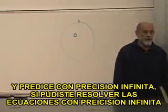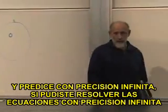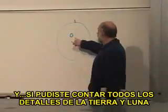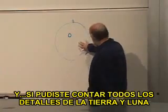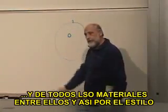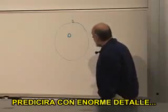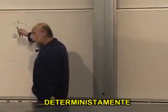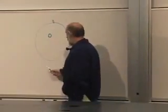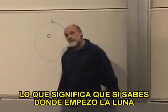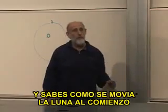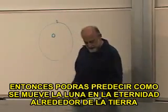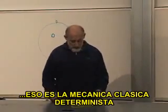And it predicts with infinite precision, if you could work out the equations with infinite precision, and if you could account for every detail of the earth and the moon, and all the material that's in between, and so forth, it would predict with enormous detail, deterministically, the motion of the moon. Which means if you know where the moon starts, and you know how the moon is moving in the beginning, then you can predict forever after exactly how the moon moves around the earth. That's the deterministic classical mechanics.